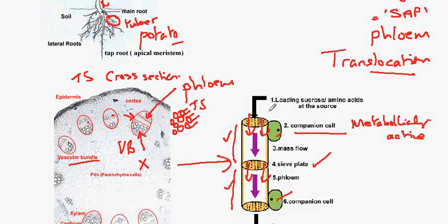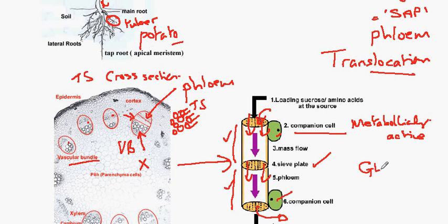So the sap is loaded into one end of the phloem and it's removed at the other end. And as previously suggested, it's possible for this movement to be reversed. So glucose is transported as sucrose along with amino acids and this forms the sap of the plant.